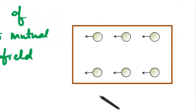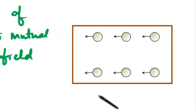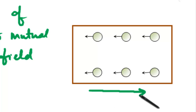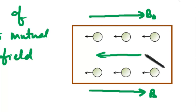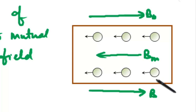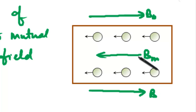Suppose a material in which individual atoms do not have any net magnetic moment. When such a material is placed in a magnetizing field, dipole moments are induced in the atoms by the applied field. The magnetic field due to induced magnetic moments opposes the original field. Thus, the resultant field inside the material is smaller than the applied field. These types of materials are called diamagnetic materials.